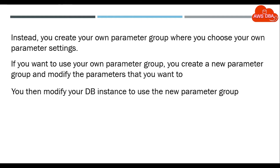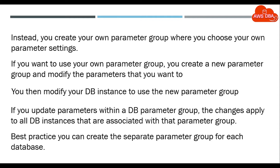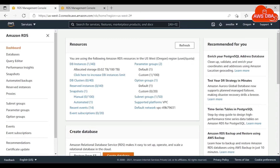After creating your new parameter group, you can assign the new parameter group to your DB instance. If you update a parameter within your DB parameter group, the changes apply to all DB instances that are associated with that parameter group. As a best practice, you can create a separate parameter group for each DB instance.